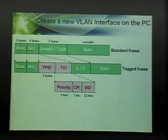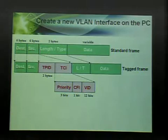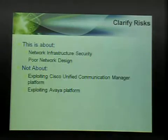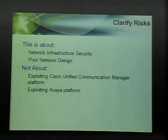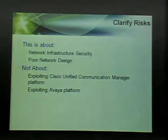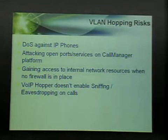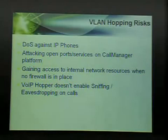We're tagging the Ethernet frame header, and there's some things we're doing in the beginning for voice VLAN discovery. We're really attacking the network infrastructure — the device discovery protocol that's used, CDP — and then we're going to talk about Avaya. This is really about attacking network infrastructure security. I want to be clear: this is about poor network design. It's not about exploiting Cisco Unified Communications Manager or exploiting the Avaya platform. Once a PC gets access into the voice VLAN, there's never a good reason for that to happen.